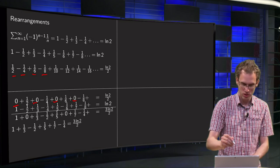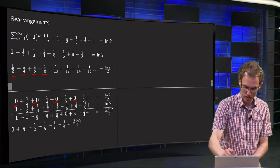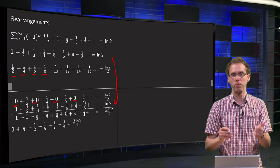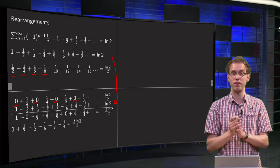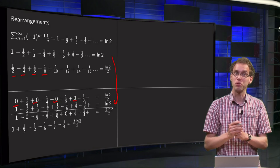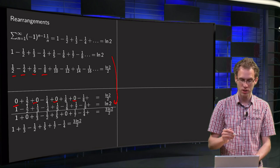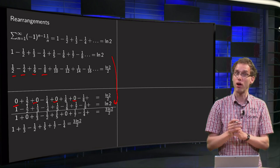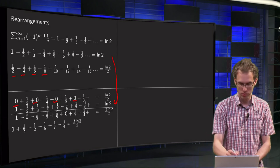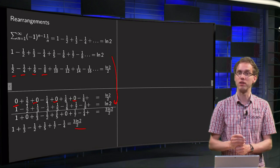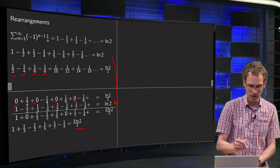Then next we just write down our original series over here. So 1 - 1/2, etc., equals ln 2. Now we are going to do the following trick: we are going to add those two series. Well, (1/2)ln 2 + ln 2 equals, of course, (3/2)ln 2.